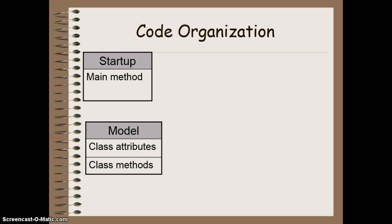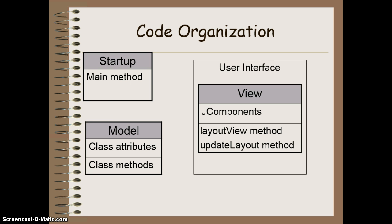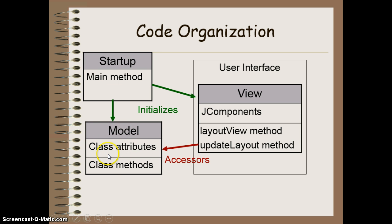So it looks something like this, if I was going to draw this out in a simple little diagram. I've got my startup method here which is a main method whose sole responsibility is to initialize the view — which is part of my graphical user interface — and then initialize the model which contains all the data that I'm actually manipulating in the background. Inside my view I've got a method to help me put everything where I want it to go, and then an update method that accesses the attributes of the model to display the data into the components that are in my view.